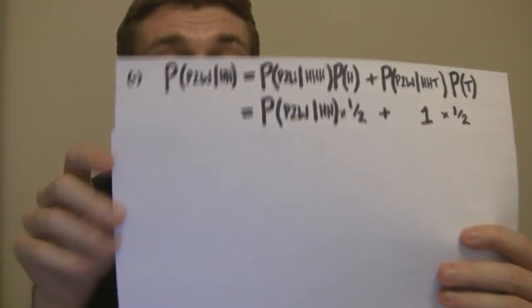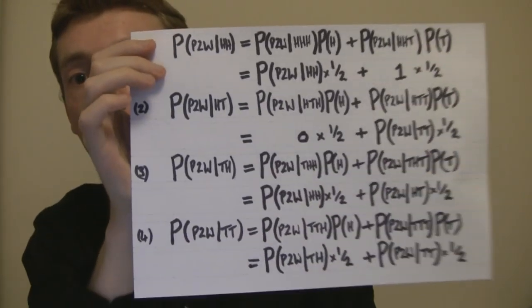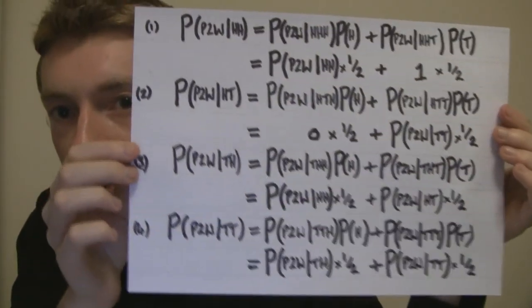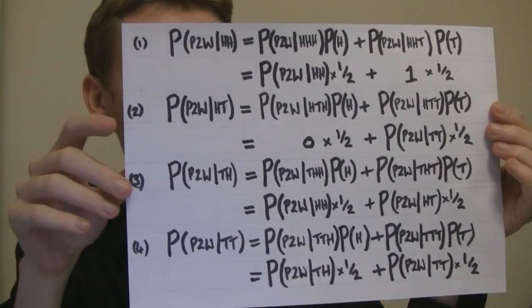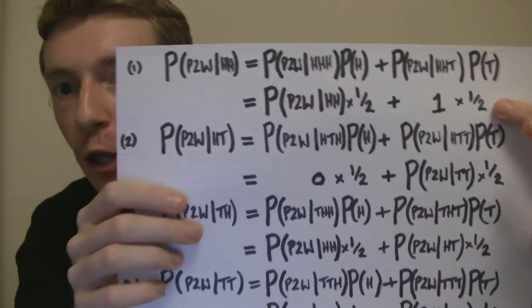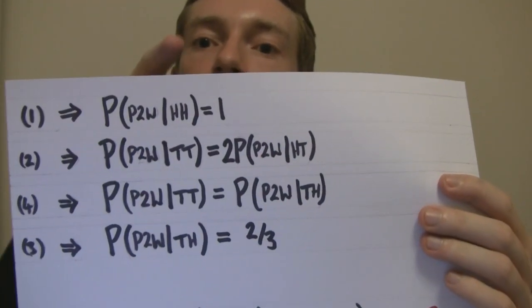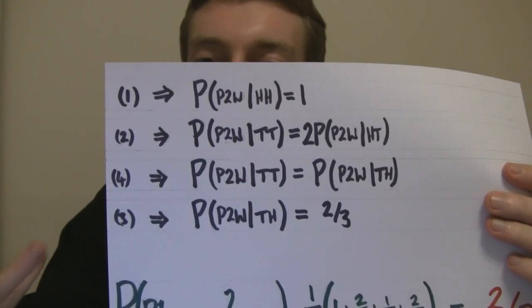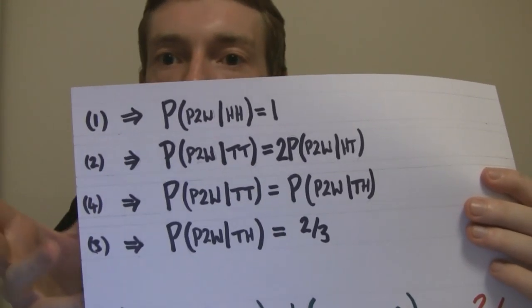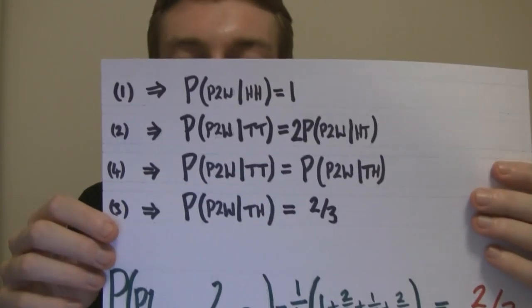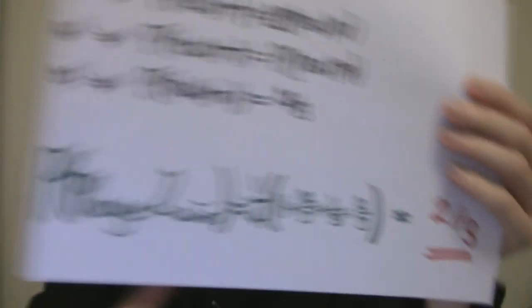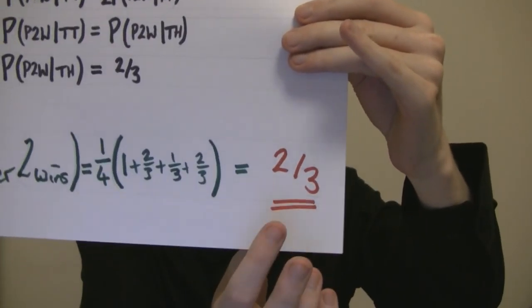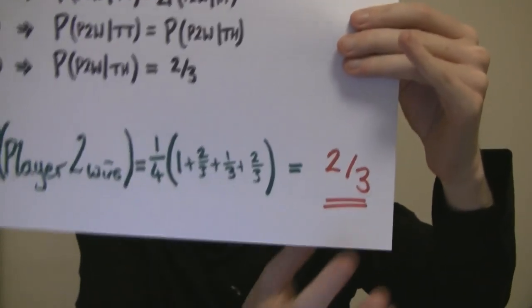From those results, we can start to work out the final missing values. Using equation one and rearranging, you find that the probability that player two wins given heads, heads is equal to one. Going through the same sort of idea with the other three equations, you can work out the other values. Stick them all into the main equation — we've got all the ingredients — and you get the final answer of two thirds. The probability that player two wins is two thirds.